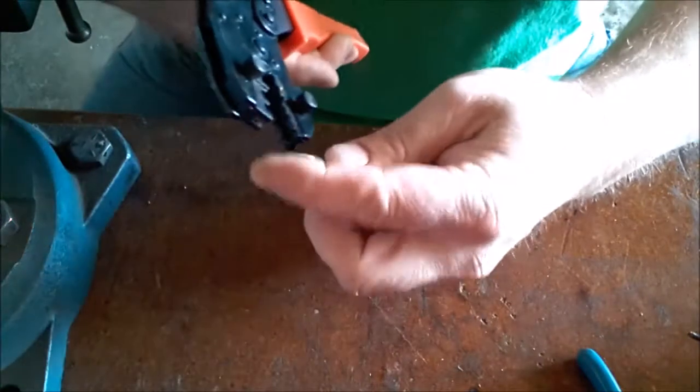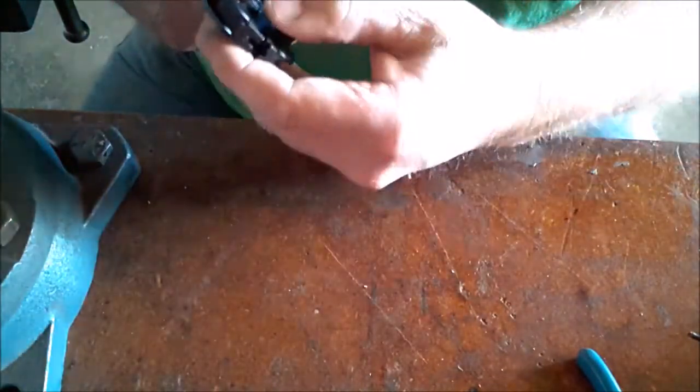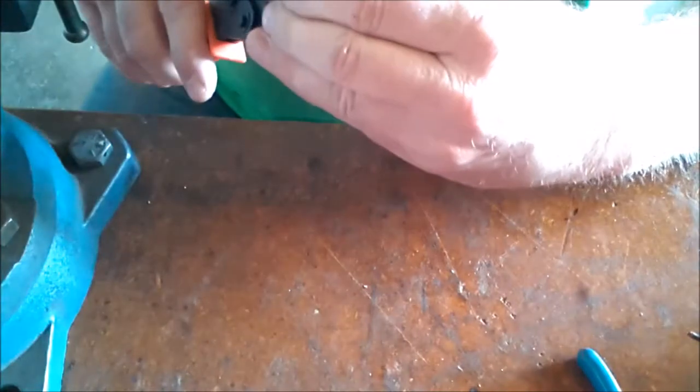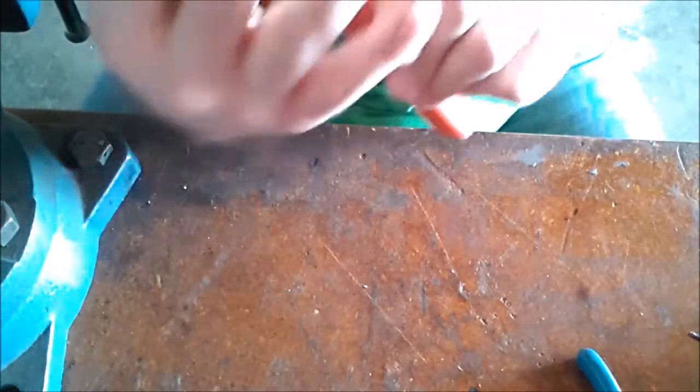And you're ready to put the terminal lug on there. Now, two ways you can do the terminal lug on this type of a crimper is you can put it in first. And what I like to do is I like to put it in and I line it up so I'm square in the hole.